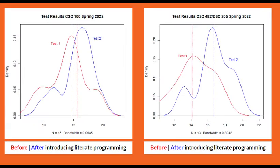Here are two graphs I created early on when I started doing this. They show how the test results of the students in three courses changed from before to after introducing literate programming with Emacs and Org Mode. You see the before-and-after: the red curve is before and the blue curve is after, and the improvement — especially on the right-hand side — is quite significant.